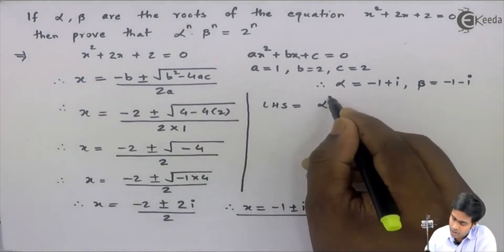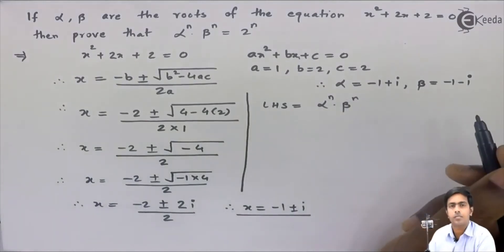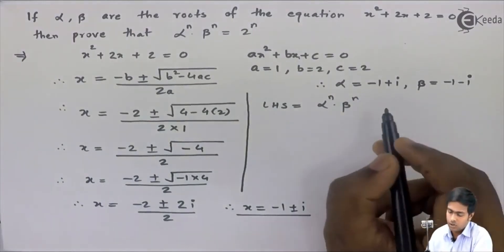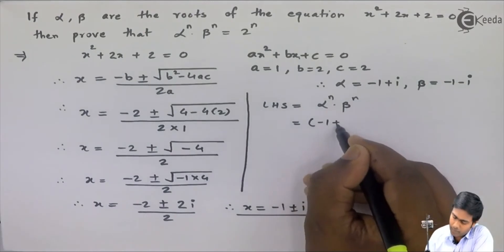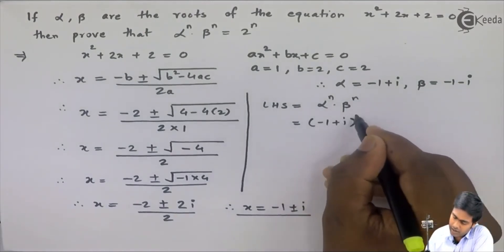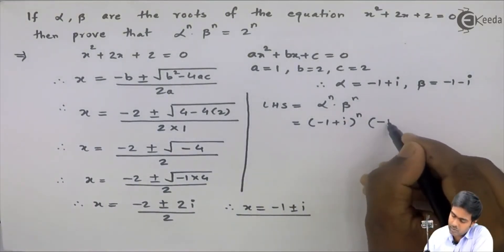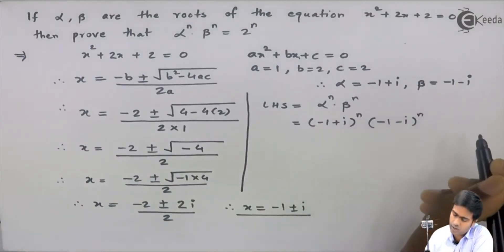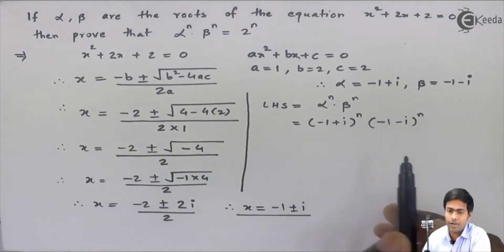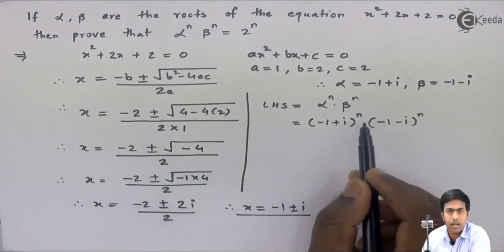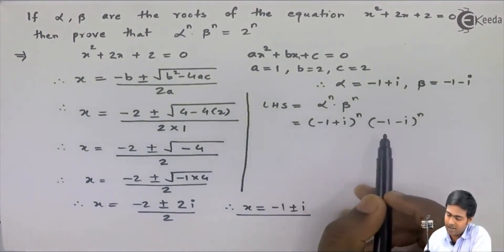In the LHS, alpha raised to n into beta raised to n is given. So I will write (−1 + i)ⁿ into (−1 − i)ⁿ. Now we have to find the nth power of a complex number which is given in Cartesian form.